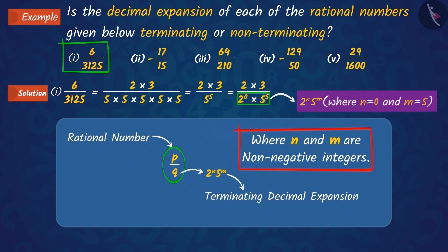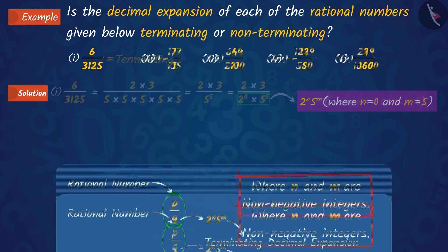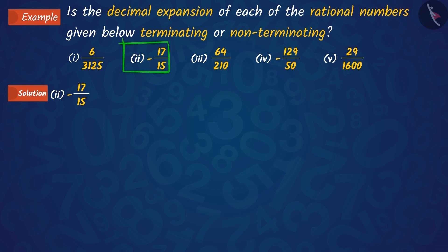So, the decimal expansion of this number is also terminating. Let us now discuss the second rational number, 17 upon 15.